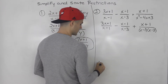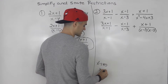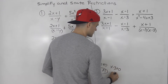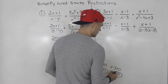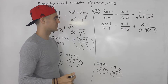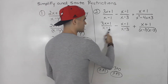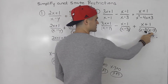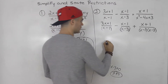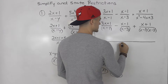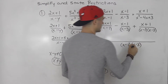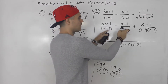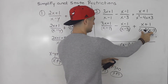x minus 1 cannot equal 0, so x cannot equal 1. And x minus 3 cannot equal 0, so x cannot equal 3. Now let's simplify. The denominators are x minus 1, x minus 3, and x minus 1 times x minus 3. When you have two different factors, the lowest common denominator is them multiplied together — which is x minus 1 times x minus 3, and the third expression already has that denominator.